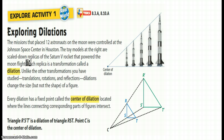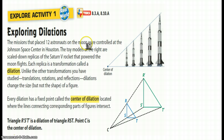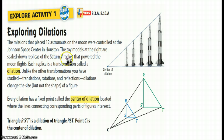The author shows us these group of rockets, and it said that the 12 astronauts that were placed on the moon, these rockets were controlled by the Johnson Space Center in Houston. The toy models at the right are scaled-down replicas of the Saturn V rocket that powered the moon flights. Each replica is a transformation called a dilation.